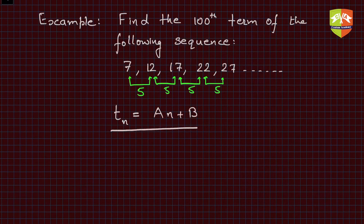It can be expressed as a linear function of n, where n is the position number or term number. So n is 1, 2, 3, 4, and so on. This is what we learned in the previous session, so we are going to use this concept.